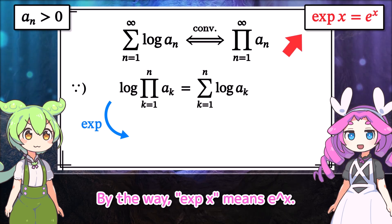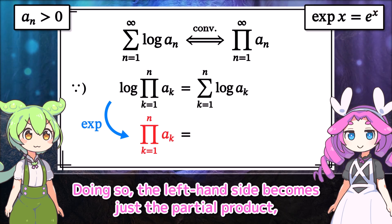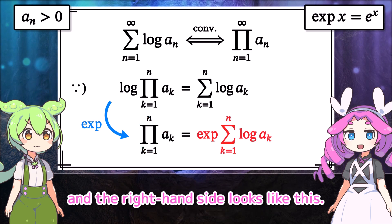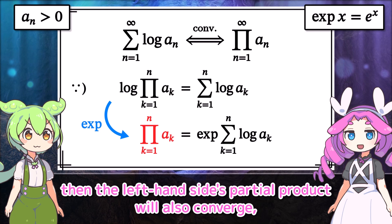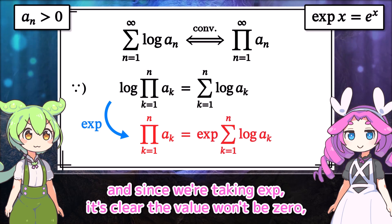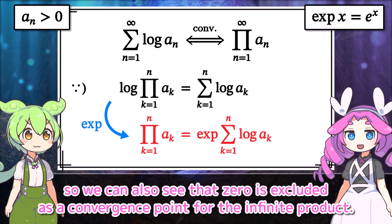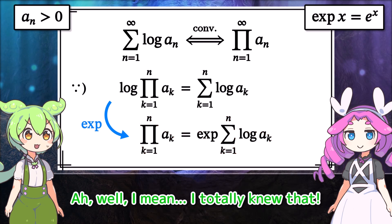By the way, exponential of x means e to the x. Doing so, the left-hand side becomes just the partial product, and the right-hand side looks like this. Therefore, when n tends to infinity, if the right-hand side's partial sum converges, then the left-hand side's partial product will also converge. And since we're taking exponential, it's clear the value won't be 0. So we can also see that 0 is excluded as a convergence point for the infinite product.